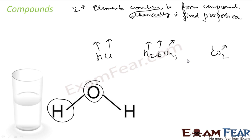So Compounds are two or more elements combined in a fixed proportion chemically to form a Compound. Compounds can actually be further broken down into elements. There are tons of Compounds, and we have further classified them into Ionic Compounds, Covalent Compounds, and Organic Compounds based on different properties. We will study these things in later classes; as of now you don't need to understand those concepts.